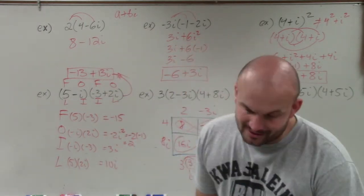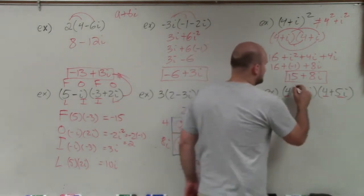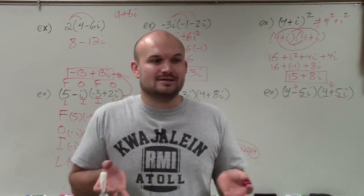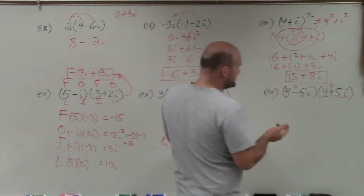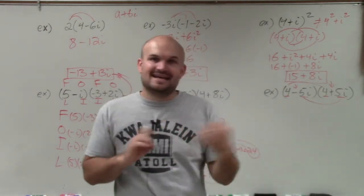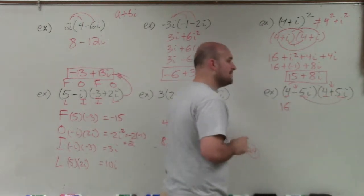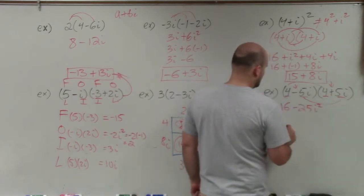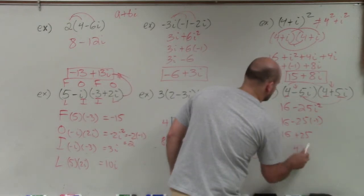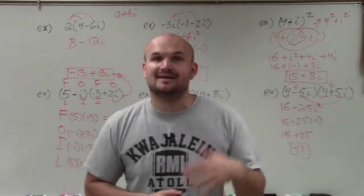In the last example, notice that the first two terms are the same and the last two terms are the same, with one positive and one negative — this is a difference of two squares. When you have a difference of two squares, the middle terms cancel to zero. So all I do is multiply 4 times 4, which is 16, and negative 5i times positive 5i, which is negative 25i squared. That gives 16 minus 25 times negative 1, which is 16 plus 25, equaling 41. And that's how you multiply complex numbers.